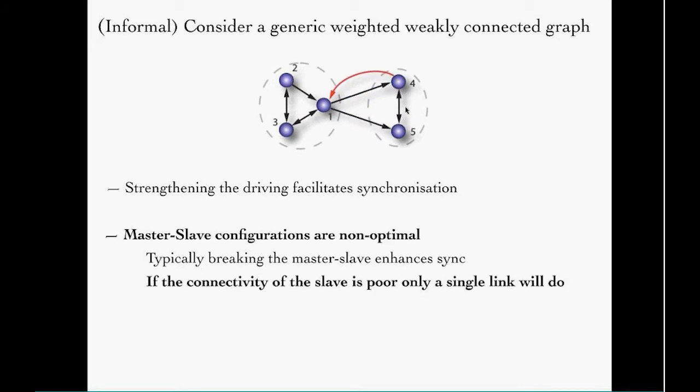The second conclusion we got is: generic master-slave networks are not optimal for synchrony. For any weakly connected network, you can always break the master-slave configuration such that after the network becomes strongly connected, synchrony will improve. What the result says is: if the connectivity of the slave is weak, it's very easy to break the master-slave into two, and you can improve synchrony by adding a single link.